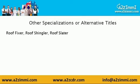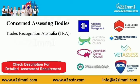The other designations through which you can apply under this unit code are Roof Fixer, Roof Shingler, and Roof Slater. To file for General Skilled Migration under the profile of a Roof Tiler, you have to get your profile assessed from Trades Recognition Australia (TRA).